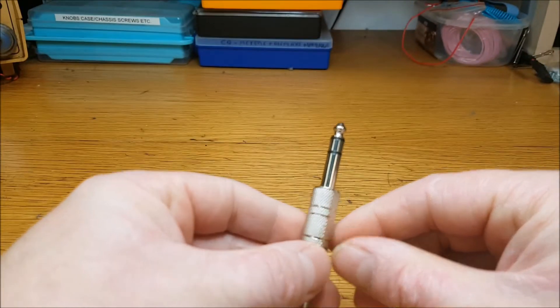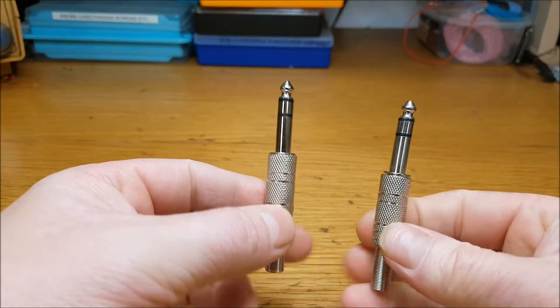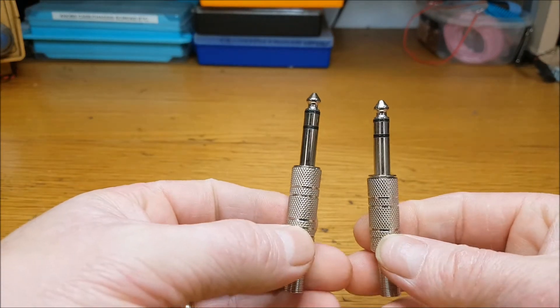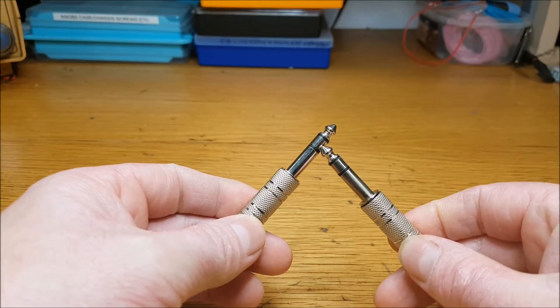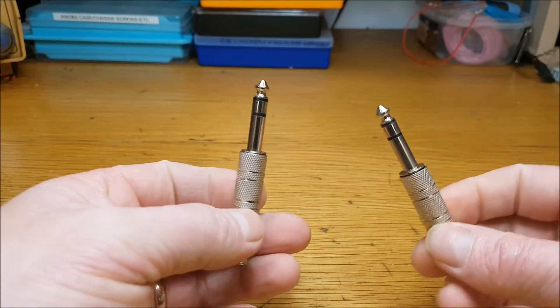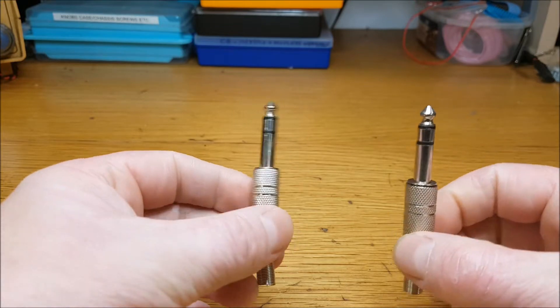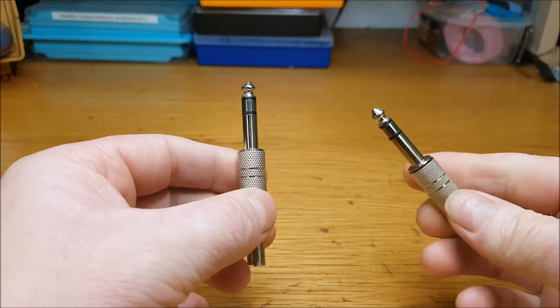Well, we have a pair of them. These are tip, ring, sleeve—tip, ring, and sleeve. This is what we need to make a balanced cable. At each end, both of them are the same.